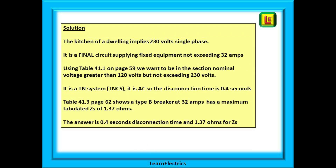We are expected to make some assumptions: a kitchen in a dwelling implies 230 volts nominal and single phase; we can also assume it is a final circuit supplying fixed equipment not exceeding 32 amps. Looking at table 41.1 on page 59, we choose the second block — the nominal voltage is greater than 120 volts but does not exceed 230 volts. It is a TN system, it is AC, and where the column and row cross is our answer: 0.4 seconds. The next part of the answer is found on page 62 in table 41.3, because it is a BS EN 60898 circuit breaker, type B, 32 amps — and below 32 is the answer: 1.37 ohms. So our complete answer is 0.4 second disconnection time and 1.37 ohms for ZS.